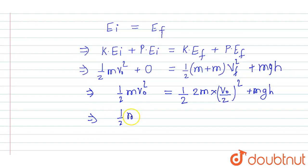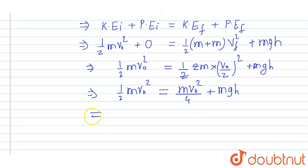Now half m v naught square equal to, canceling this two, m v naught square upon 4 plus m g h. So I can write half m v naught square minus m v naught square upon 4 equal to m g h.